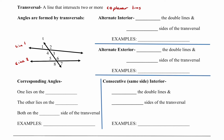An alternate interior angle is going to be on the inside — right here is the inside, inside of the double lines — and they're going to be on the opposite, alternating sides of the transversal. For example, angle four and angle six are alternate interior angles. Angles three and angle five are also alternate interior angles. So we have two pairs of alternate interior angles.